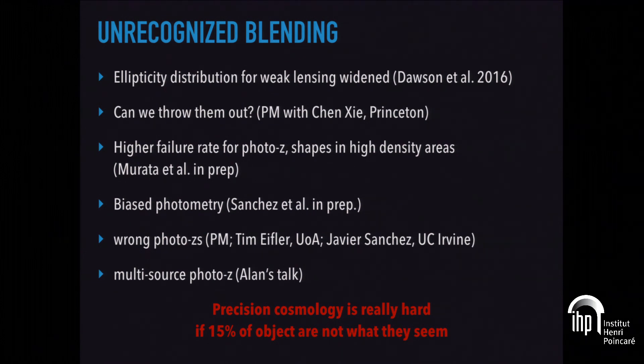There's a higher failure rate for photo-z, unless you do something like the multisource photo-z solution that Alan talked about. But if you don't do this, there's a higher failure rate also for the shapes because they are more erratic. As a consequence, you get biased photometry and hence problems in the photometric red shifts. You tend to bias your photometric red shifts if you don't do anything clever. We're right now looking into how bad that gets if you weren't doing anything about the unrecognized blend rate in photo-z. Whenever you try to do something with precision on top of it, precision cosmology, and 15% of the objects are not what they seem, you should reconsider. It doesn't mean you should give up, it just means that you need to be careful.